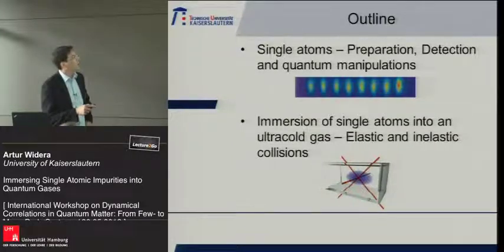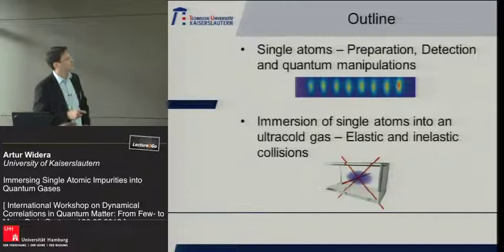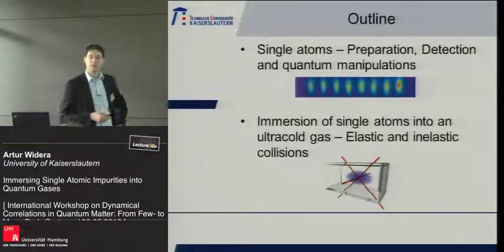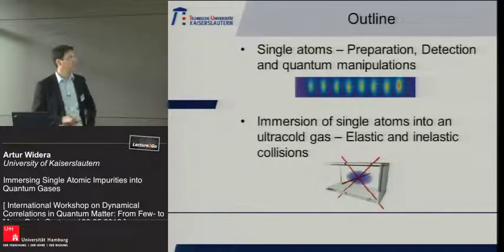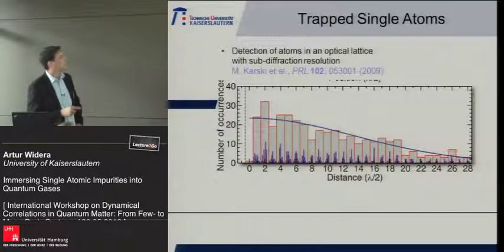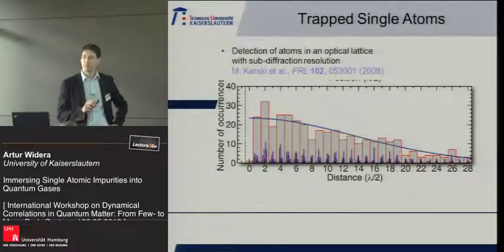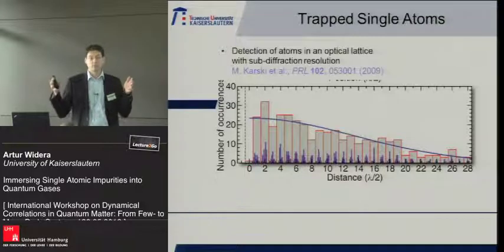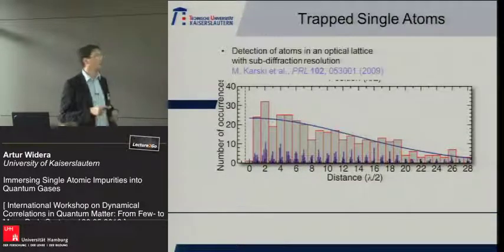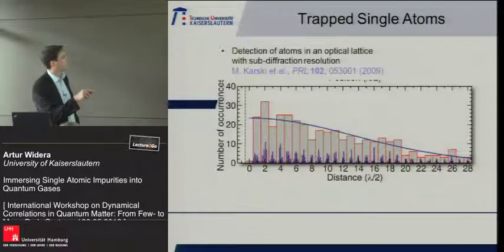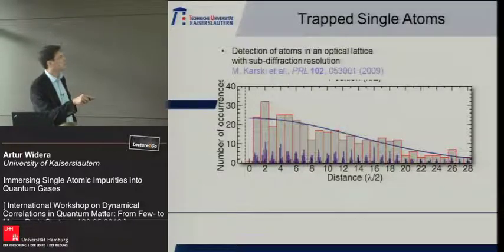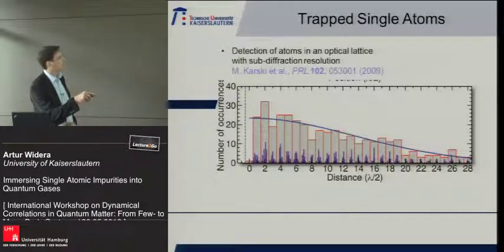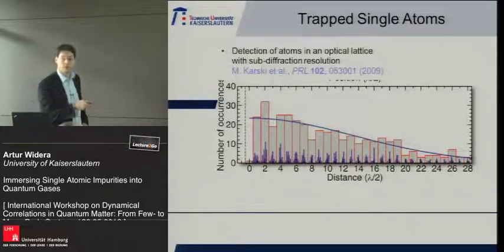The first question is how well can we prepare and detect these individual atoms? We have developed a method to detect single atoms with sub-diffraction resolution in the optical lattice. If we take hundreds of images of up to 30, 40, or 100 atoms and make a histogram of the mutual distances, we reproduce the optical lattice very well, even down to nearest neighbors. The diffraction limit here is at four to five lattice sites, so we go well beyond diffraction.